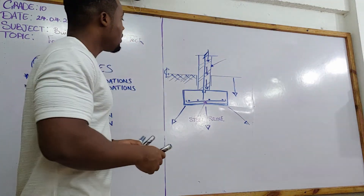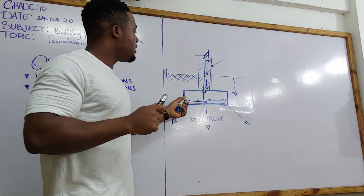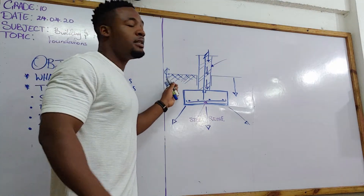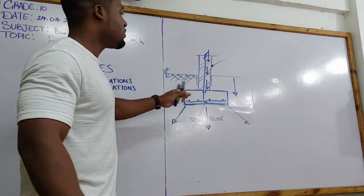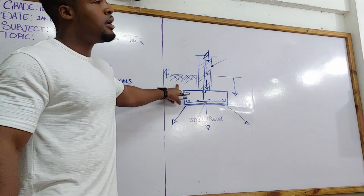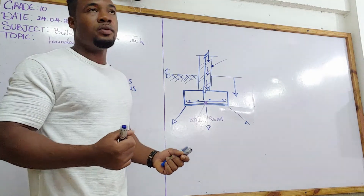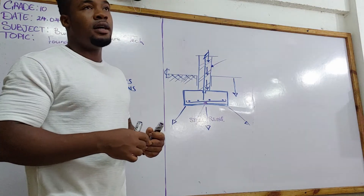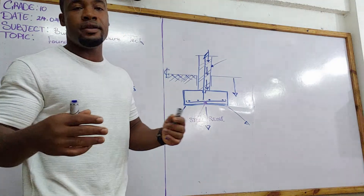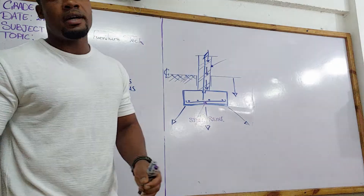The foundation firstly distributes the load of the building. It should also be designed to resist various volatile chemicals and reactions within the soil, such as sulfates. It must be durable and strong enough to anchor the building in place, whether it results from land slippage, earthquakes, or any other natural disaster.